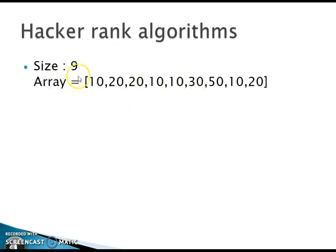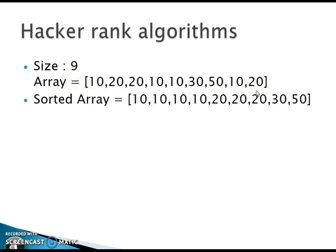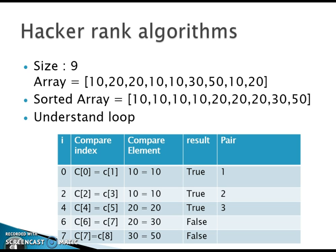Here is the HackerRank algorithm for this challenge. We have a size of nine. The sorted array will be: 10, 10, 10, 10, 20, 20, 20, 30, and 50. Now we are going to understand the loop we are going to make. Starting from the zeroth element and going through each index respectively.